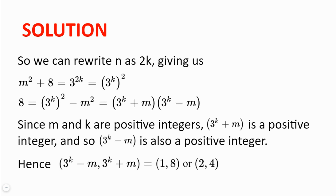Now, we can rewrite our equation to get the difference of 2 squares, 8 equal to 3 to the power of k squared minus m squared, which we can factorise to get 3 to the power of k plus m multiplied by 3 to the power of k minus m.